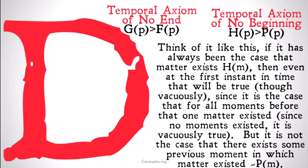Think of it like this: if it's always been the case that matter exists — H-M — then even in the first instant of time, that will be true, just vacuously, since for all moments before that first moment matter existed — vacuously, since no moments existed. But it's not the case that there exists some previous moment in which matter existed; it's not the case that P-M, but H-M is the case. Therefore time must have a beginning. So if H-M implies P-M, or if H-P implies P-P, then time has no beginning. If you're confused, check out the previous videos on the beginning and end of time and on things being vacuously true.